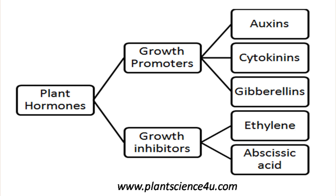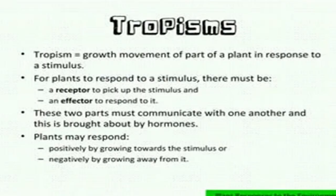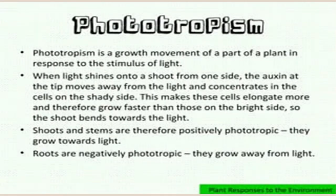Now let's also look at tropism. A tropism is a response by parts of the plant to an external stimulus — think about the sunflower. Stimuli can be light, gravity, or water. Tropisms are divided into three: phototropism, geotropism, and hydrotropism. Phototropism is a plant growth response to light. When the plant is responding to light, it is known as phototropism.